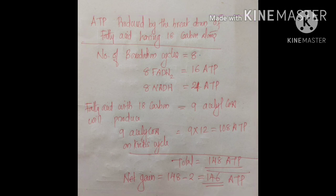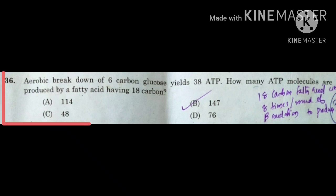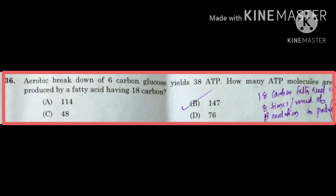Looking at the options, we calculated 146 ATP, but the available option is 147. This is because in the older concept, only 1 ATP was required for activation of fatty acid. Nowadays we know that 2 ATP molecules are consumed. So the answer according to the given options is B. 147, based on the older convention of subtracting only 1 ATP.